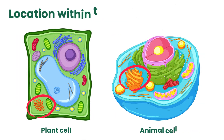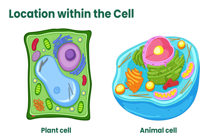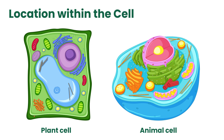In both animal and plant cells, the Golgi apparatus is located in the cytoplasm near the nucleus and endoplasmic reticulum. In plant cells, it is additionally positioned near the cell membrane for synthesizing cell wall components.